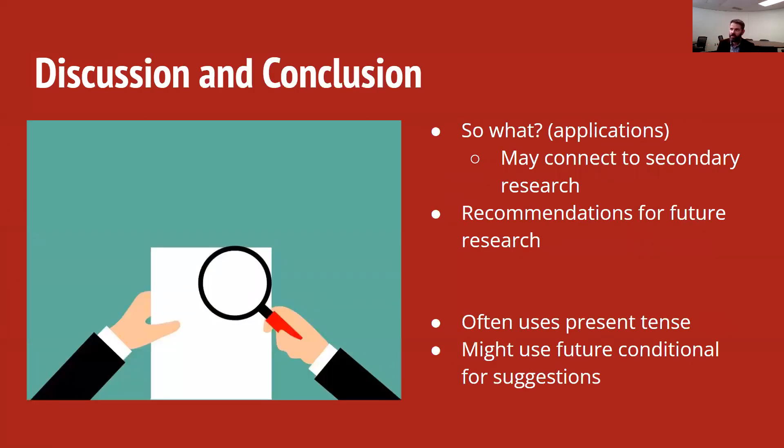Finally, in our discussion and conclusion section, we want to do the 'so what.' We want to answer the question: Why does this matter? How can we apply this to people's lives? Why would our audience care about this? As we do that, we may make connections back to any of the sources that we cited in our synthesis and try to show similarities in our research with what we've learned. Or we're seeing some differences.